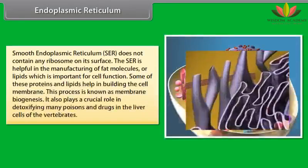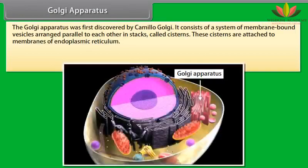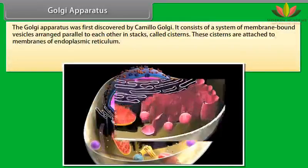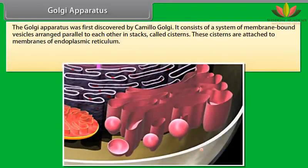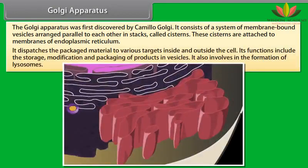Smooth endoplasmic reticulum (SER) does not contain any ribosomes on its surface. The SER is helpful in the manufacturing of fat molecules or lipids, which are important for cell function. Some of these proteins and lipids help in building the cell membrane, a process known as membrane biogenesis. It also plays a crucial role in detoxifying many poisons and drugs in the liver cells of vertebrates.